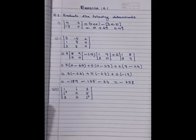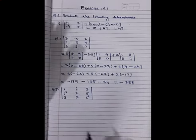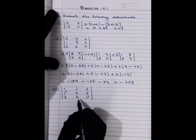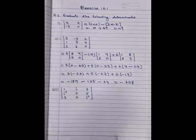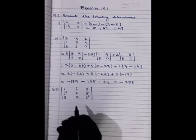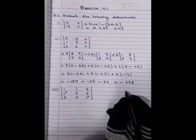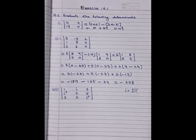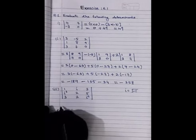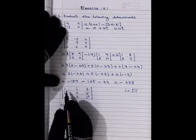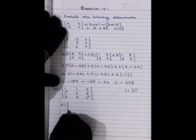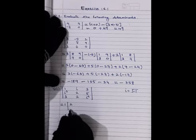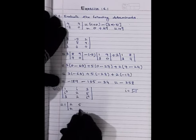Next, question number 3. The determinant has elements 1, i, 3 in the first row; i³, 2, 5 in the second row; and 3, 2, i⁴ in the third row. Here, i is a complex number. We know that i = √(−1). First, expand the determinant. The first element is 1 into its minor determinant — eliminate first row, first column — remaining: 2, 2, 5, i⁴.